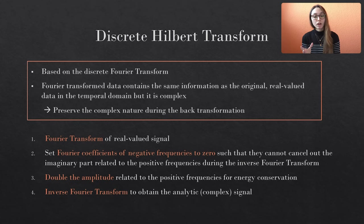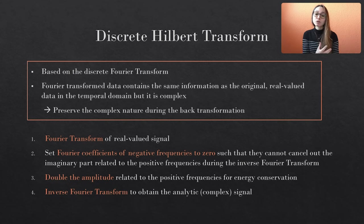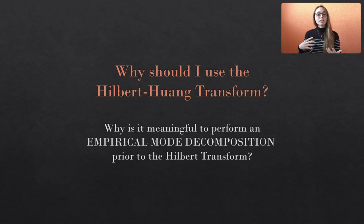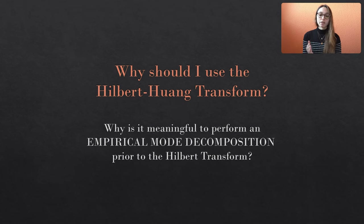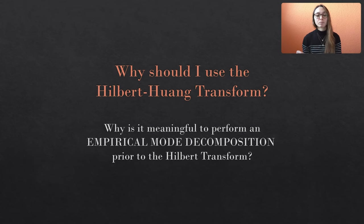If this was too fast, please watch my previous video on the Hilbert transform and the Hilbert spectrum, where I explain the whole magic behind the Hilbert transform in detail, and then come back to this point. Now that we have reviewed the Hilbert transform, let's see why the Hilbert-Huang transform is a very useful extension of the classical Hilbert transform. It basically performs an empirical mode decomposition prior to the Hilbert transform — the Hilbert transform is applied to each intrinsic mode function individually, and the Hilbert spectrum is built by adding up all individual spectra.